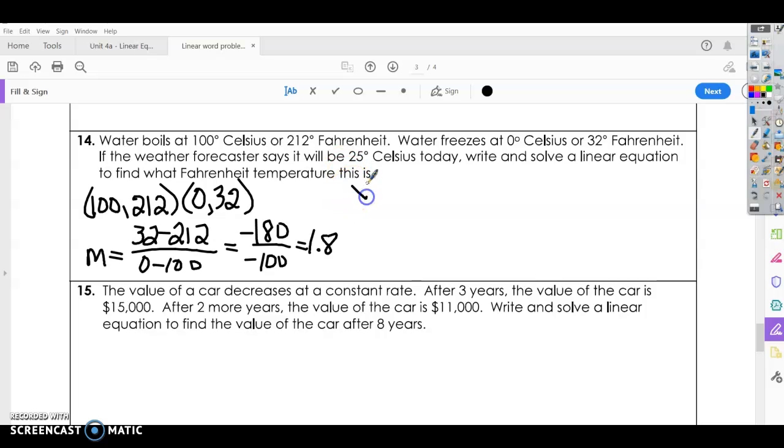Alright, plug it into your point slope form. Y minus y. Let's use 212, our first point. And then my slope, 1.8 times x minus our x from our first point. And then kind of simplify and clean it up. Actually, why don't we use the second point? Just to show you it doesn't matter, but the numbers are a little smaller. So it might be a little quicker.